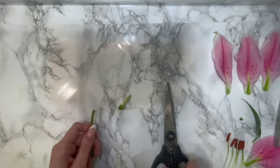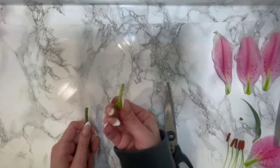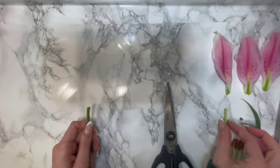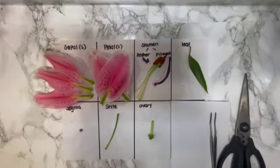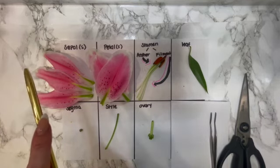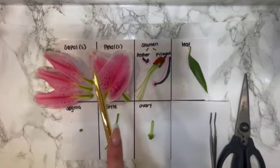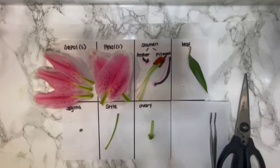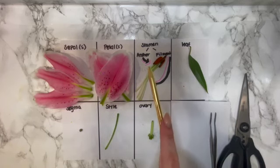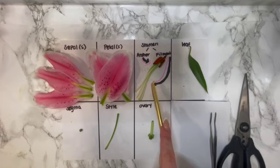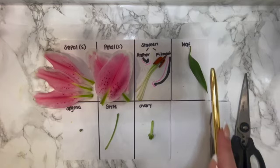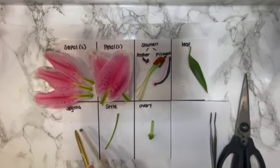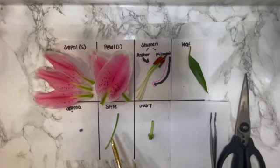As a little review, I just want to show that we have the sepal, the petals, the stamen — which has the anther and the filament — the leaf, the stigma, the style, and the ovary. And that is the anatomy of a lily flower.